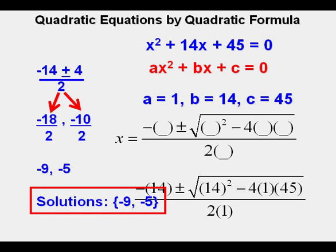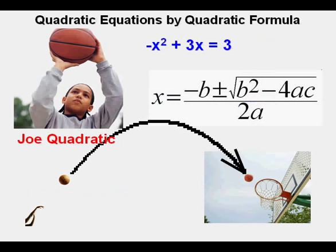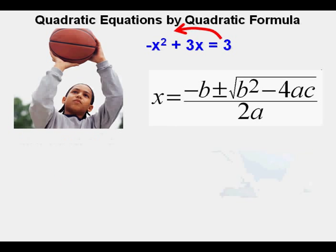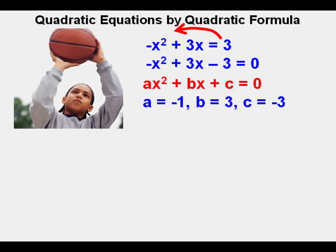Joe will now look at this problem, negative x squared plus 3x equals 3. The first thing Joe does is put the equation in standard form. For that, he needs to move out the 3 on the right. The positive 3 becomes minus 3 on the left side of the equation and it becomes negative x squared plus 3x minus 3 equals 0.